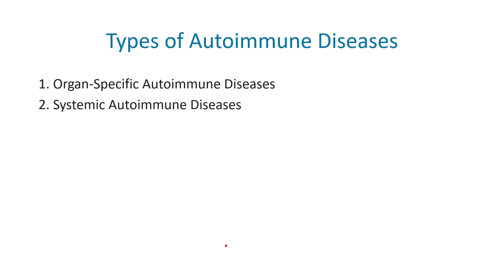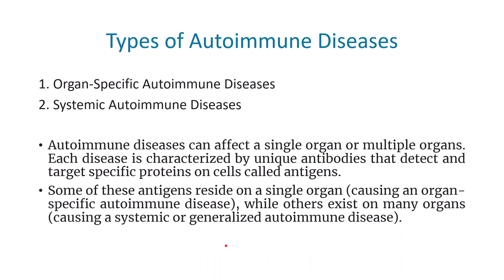There are two types of autoimmune diseases. Autoimmune diseases can affect a single organ or multiple organs. Each disease is characterized by a unique antibody that can detect and target a specific protein present on the cell, called an antigen. If these antigens reside on a single organ, it causes an organ-specific autoimmune disease. But when they exist on multiple organs, we call it a systemic or generalized autoimmune disease.